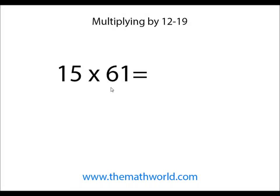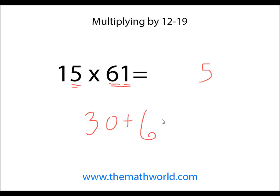The last example we're going to look at is 15 times 61. We'll continue with our theme — 5 times 1. We're going to go ahead and write down 5. Don't have any remainders. Then we're going to do 5 times 6, the other number. That's 30. And then 30 plus this number right here, 61. So 30 plus 61 is 91. And 15 times 61 is 915.